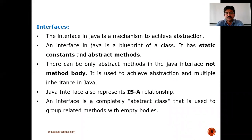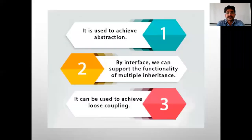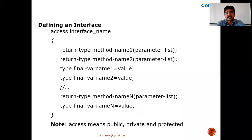Interface is a mechanism to achieve abstraction. We can call it a blueprint of a class, and it consists of static constants as well as abstract methods. It also supports the inheritance concept, that is the IS-A relationship, and it consists of method declarations without body. A method without body we can call an abstract method.